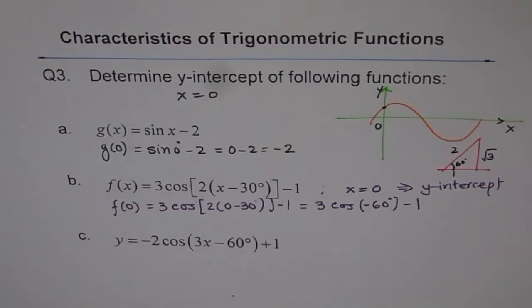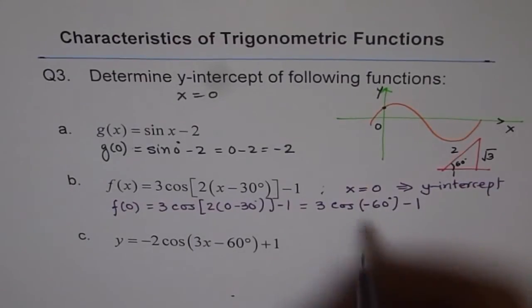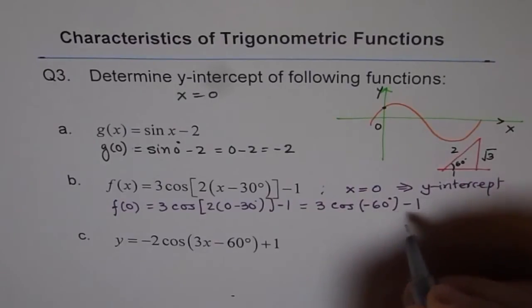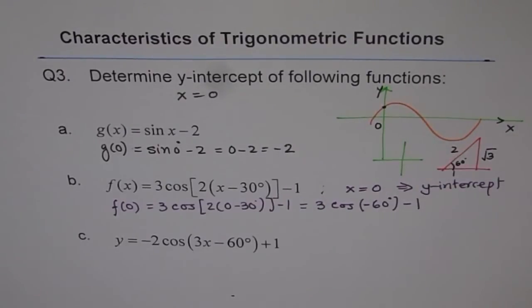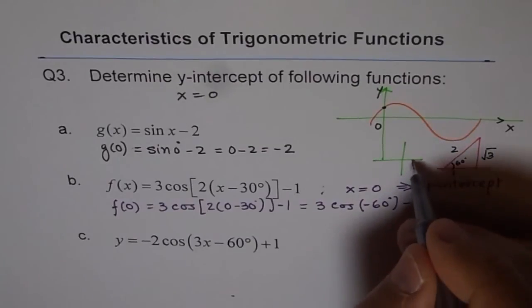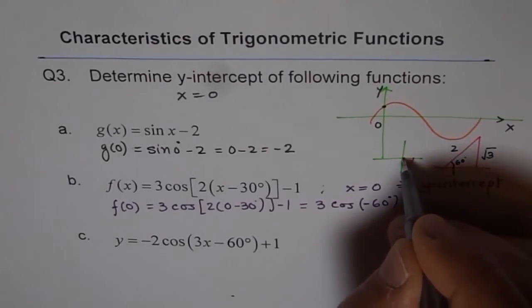And the second part is, how to do minus of 60 degrees? Well, for minus of 60 degrees, let's think like this. Now, minus means you are going in clockwise direction. So you are in this quadrant.